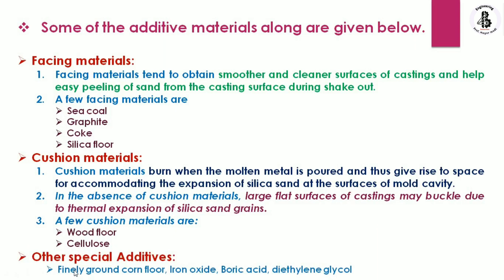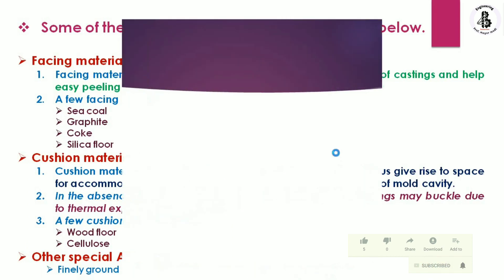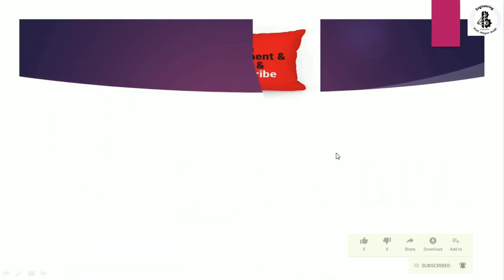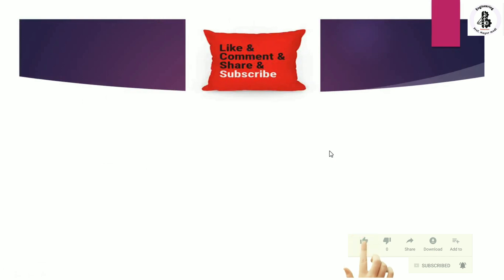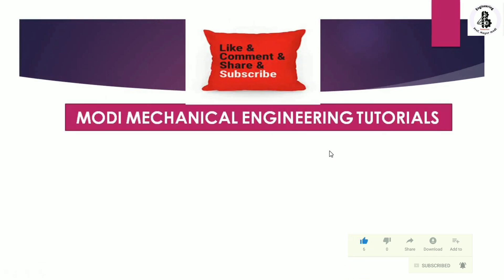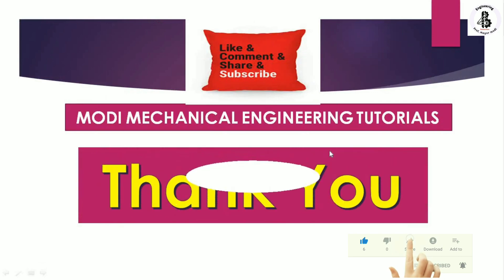Other special additives used in making sand molds include ground corn flour, iron oxides, boric acid, and diethylene glycol. I hope you understand this topic. If you like this, please subscribe and share Modi Mechanical Engineering Tutorials. Thank you so much and keep watching.